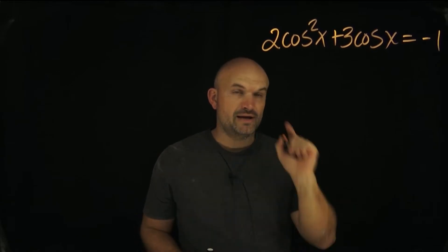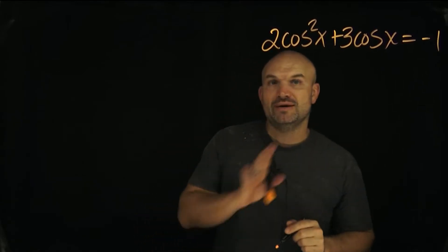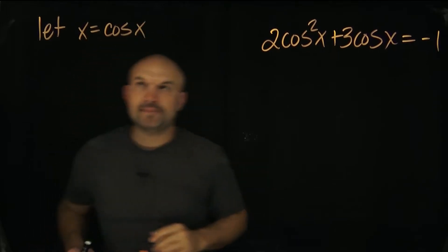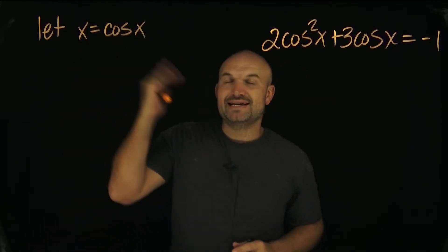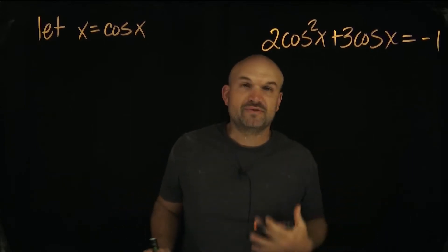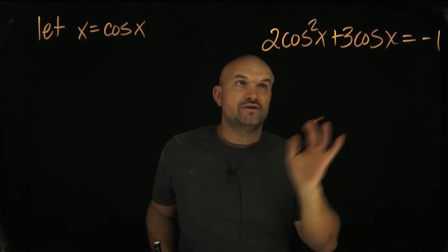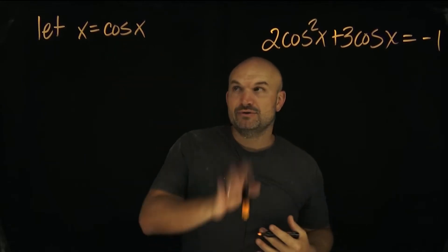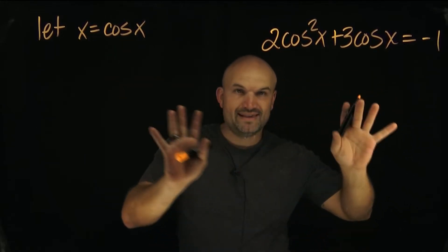That's something you want to look out for. And when you see that, what I want you to do is use substitution. So sometimes we use u. In this case, I'm just going to use x, because x is the most famous variable that we've used in our algebra. So if I'm going to say cosine of x is going to be equal to x, now what I'm going to do is I'm just going to rewrite this equation with x's.